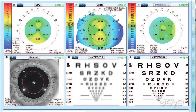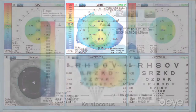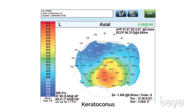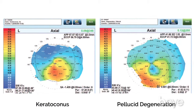The next thing I look at is the axial map, which tells me the amount, the location, and the pattern of the anterior corneal astigmatism. If it's a very irregular astigmatism pattern — if it's a keratoconus pattern or pellucid — then that patient may not be an ideal candidate for a toric implant. On the other hand, if it's a beautiful bowtie pattern, then that patient is a perfect candidate for a toric implant.